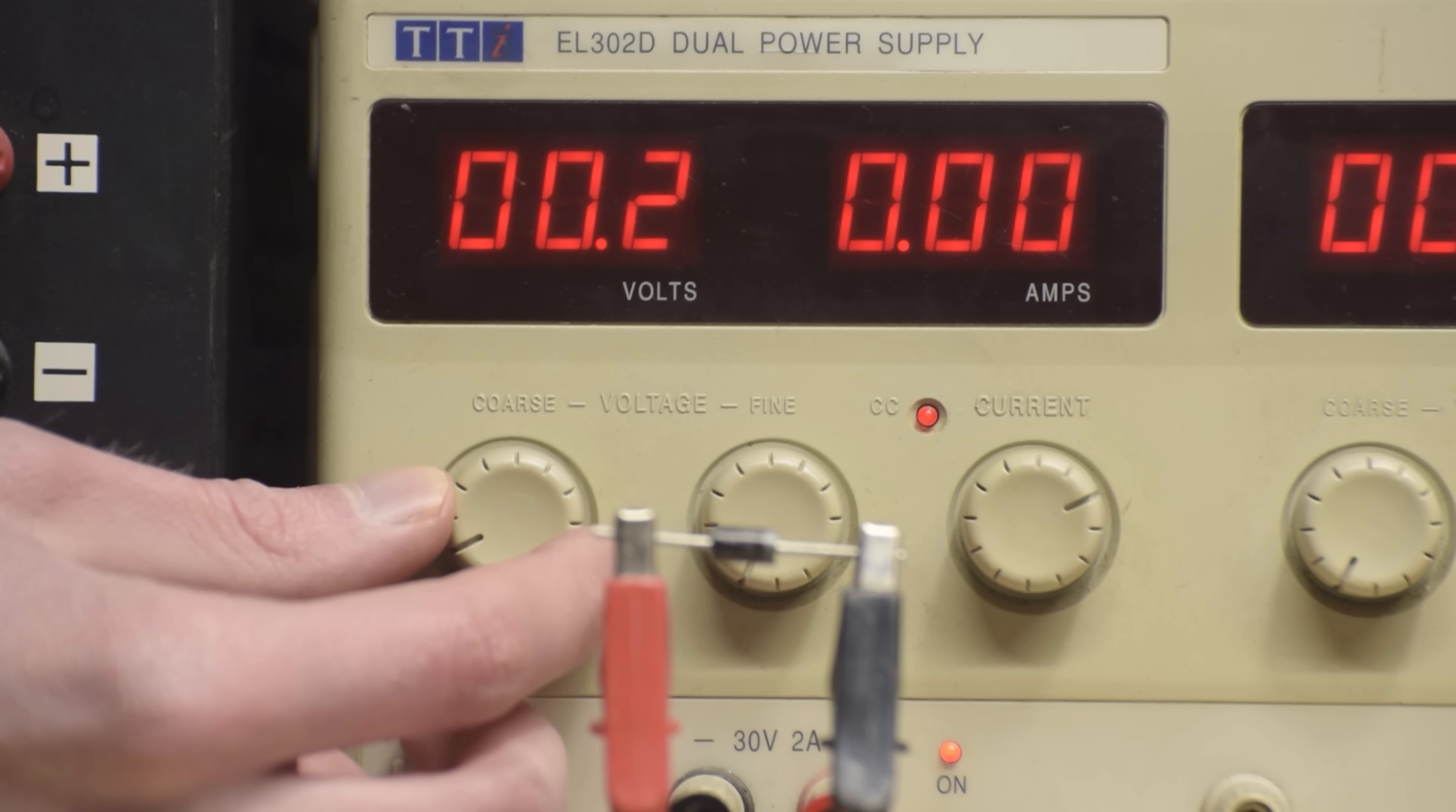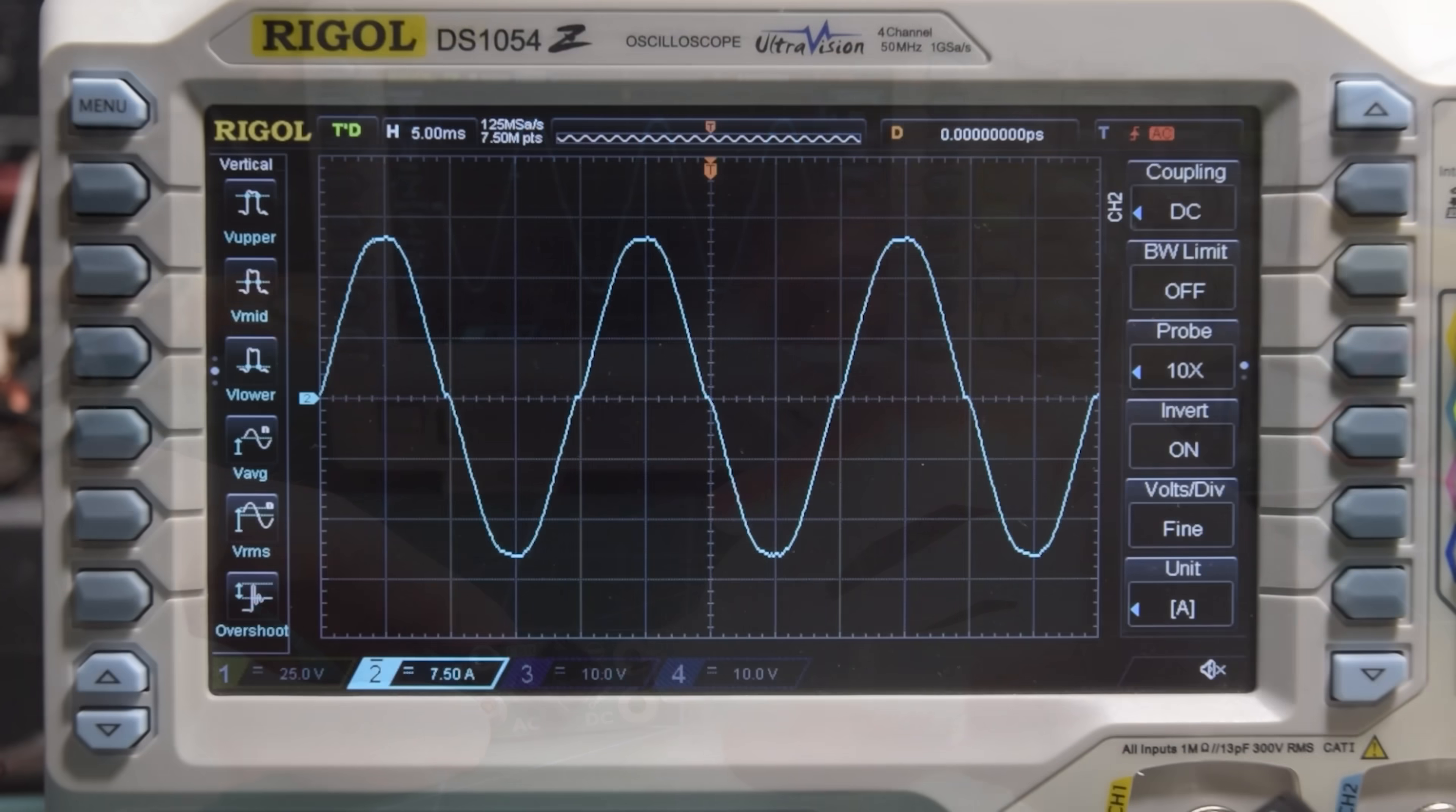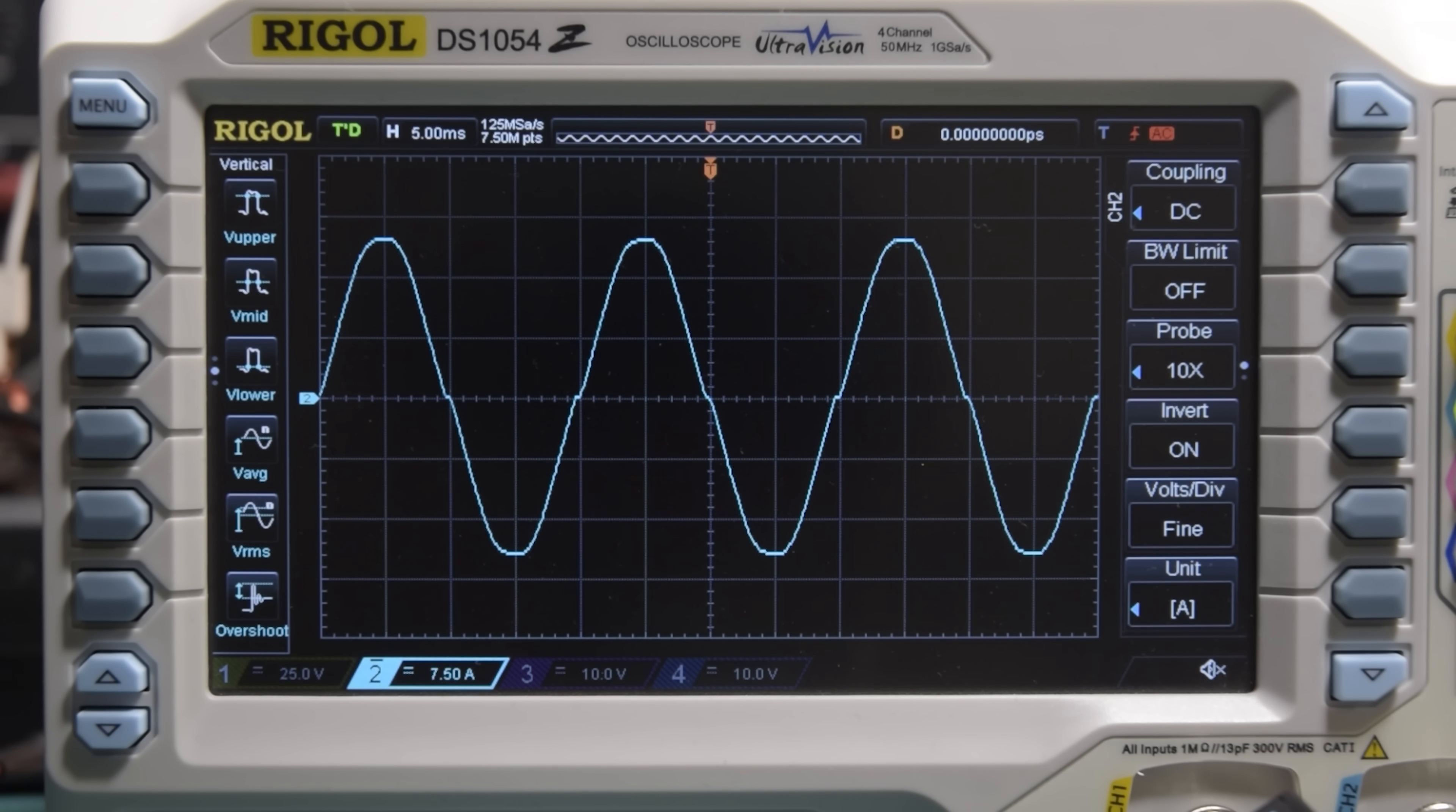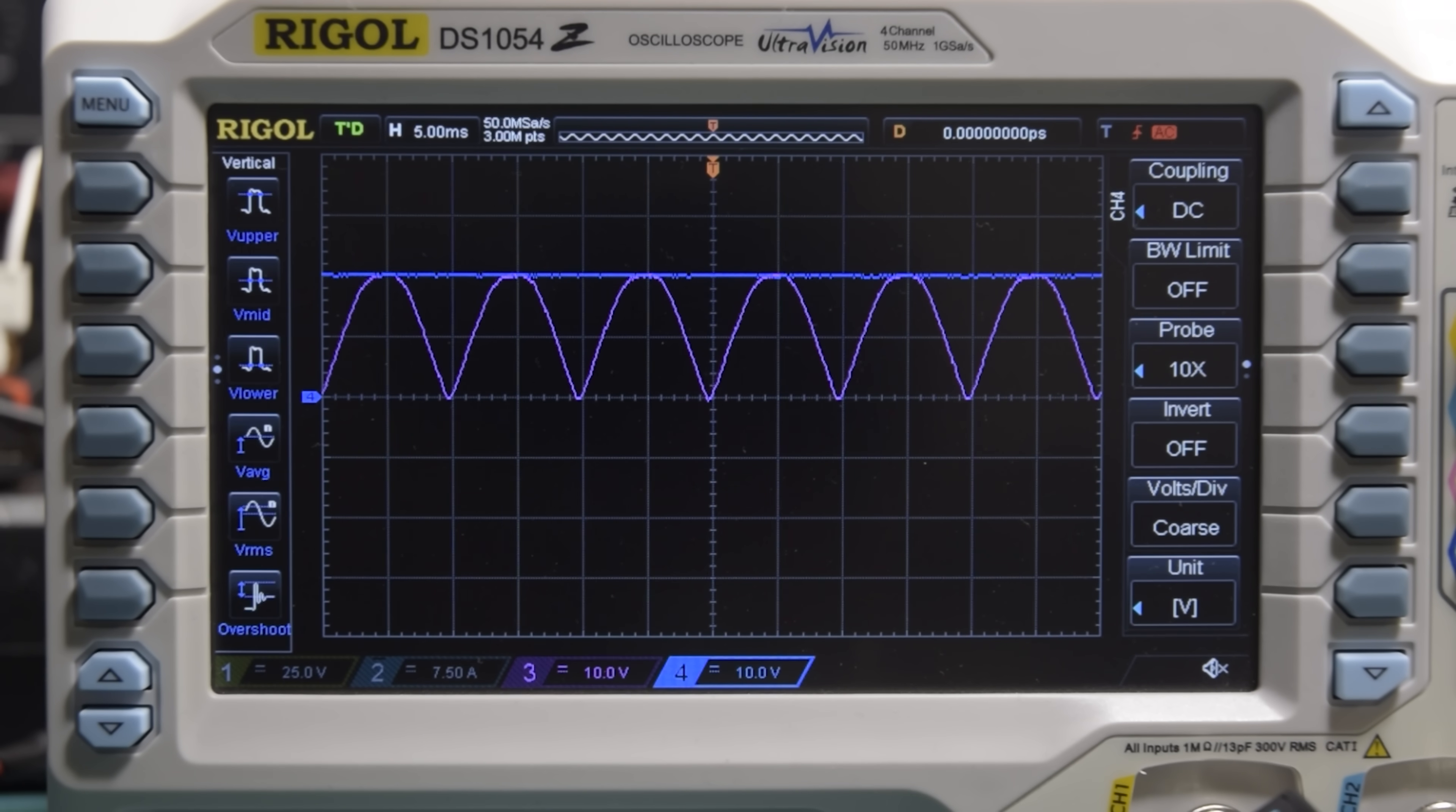This means current will only flow from the AC input when its voltage is higher than the DC output. For basic loads, this isn't a problem. For example, here I have a simple 12 volt lamp, and we can see the current drawn on the AC side of the rectifier is fairly smooth and sinusoidal. This is because the lamp isn't storing any energy, it's just consuming it, so when the AC voltage reduces, the DC voltage follows.